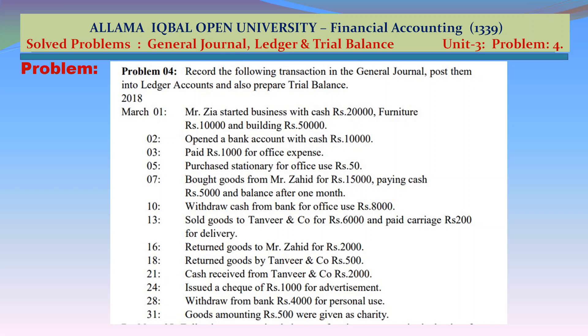March 3: paid Rs 1,000 for office expenses. March 5: purchased stationery for office use, Rs 50. March 7: bought goods from Mr. Zahid for Rs 15,000, paying cash Rs 5,000 and balance after one month. March 10: withdrew cash from bank for office use, Rs 8,000.